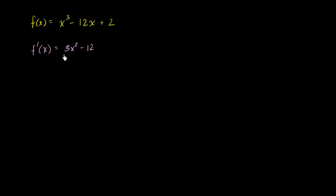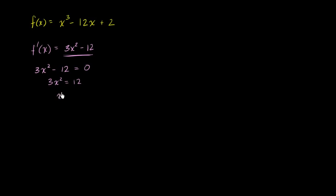We're going to get a critical point when f prime of x is either undefined or 0. This thing is defined for all values of x, so the only places we'll find critical points is when f prime equals 0. Setting 3x squared minus 12 equal to 0: add 12 to both sides to get 3x squared equals 12, divide by 3 to get x squared equals 4, so x equals 2 and x equals negative 2.